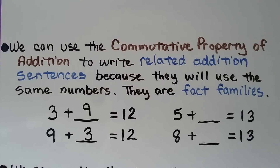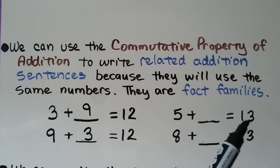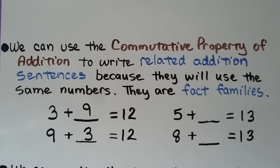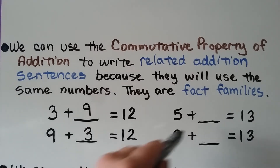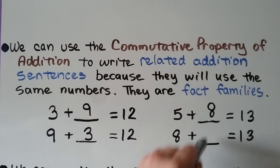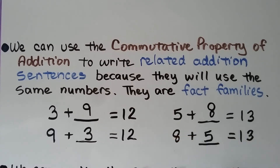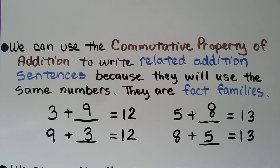For this one, we have 5 plus something equal to 13, and 8 plus something equal to 13. We have a 5, an 8, and a 13 — those are our related facts. So we can write 5 plus 8 and 8 plus 5, putting them in different orders, and both equal 13.